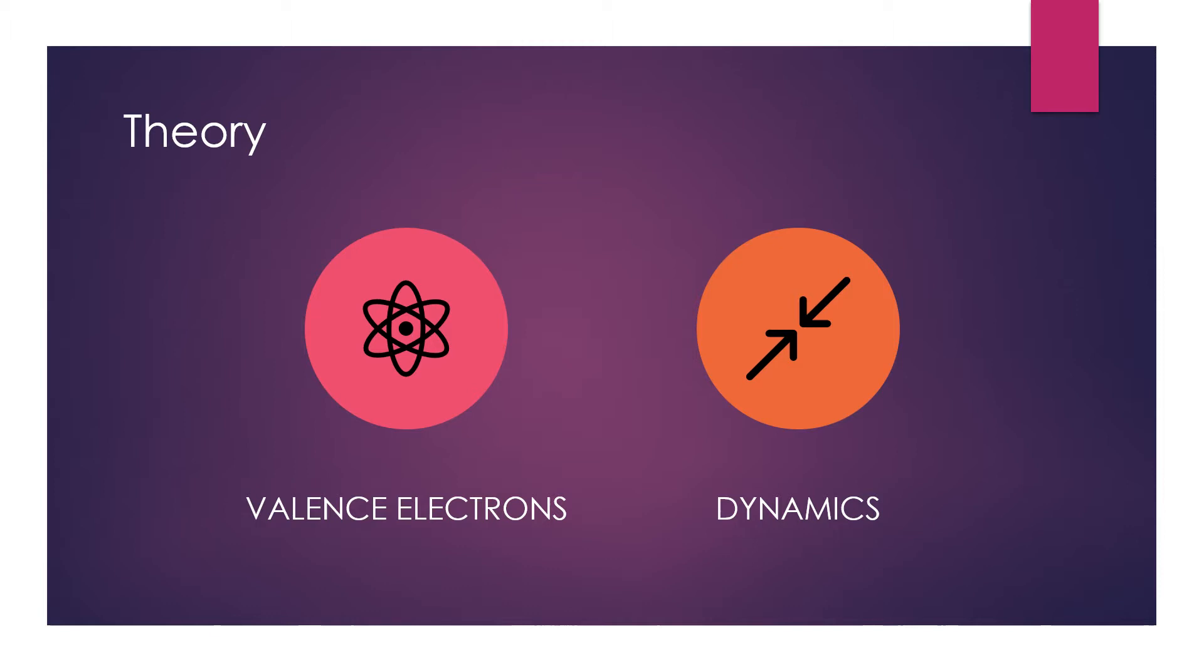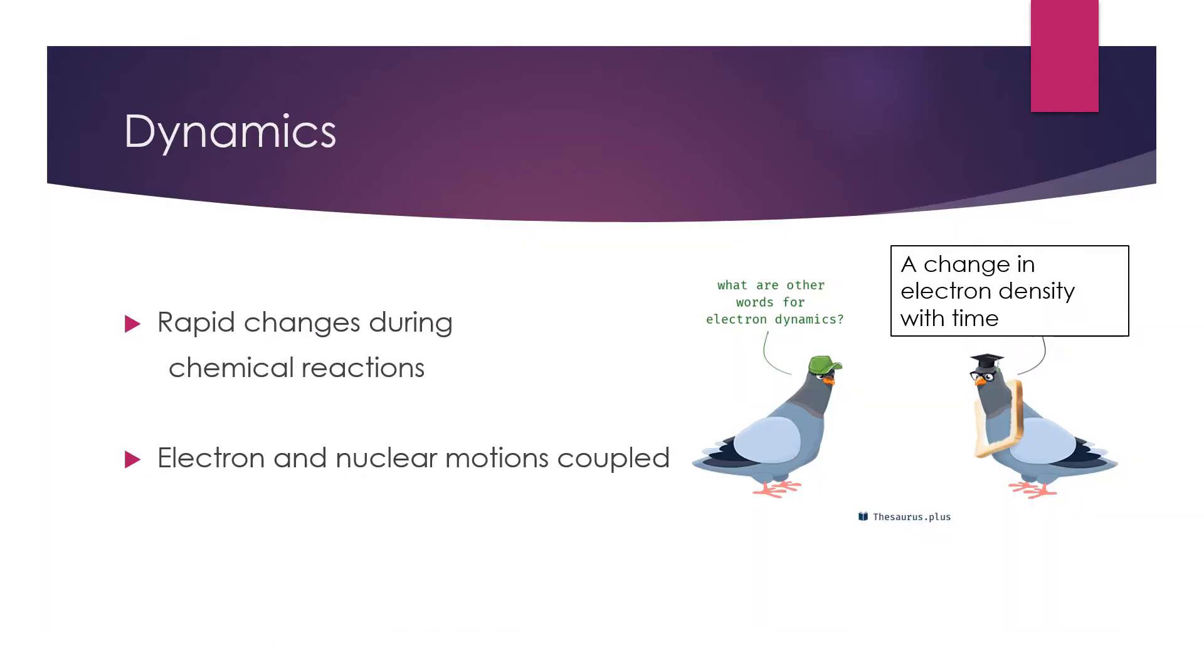How does this system evolve with time? This is easy to think of for classical systems, but a little more difficult for quantum mechanical ones. What do dynamics mean for electrons in a molecule? As explained by these two pigeons, the most simple way to describe electron dynamics is a change in the electron density of a system with time.